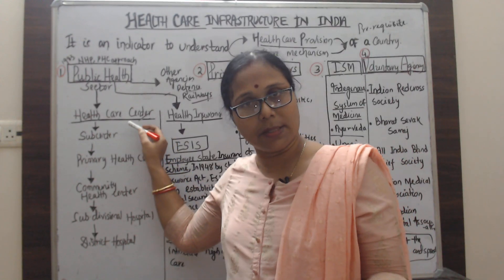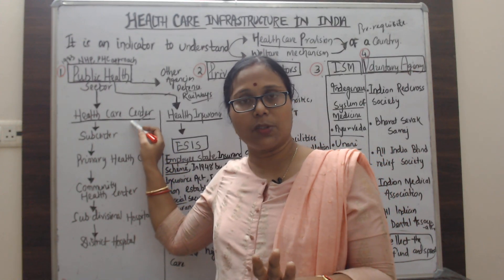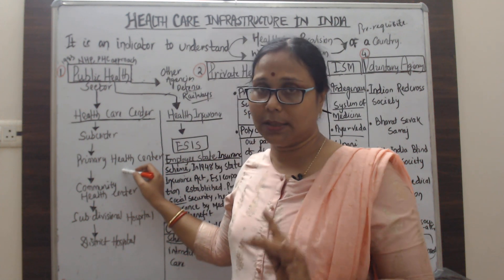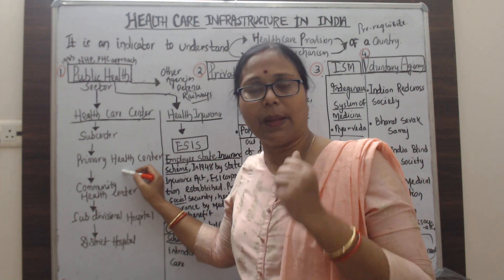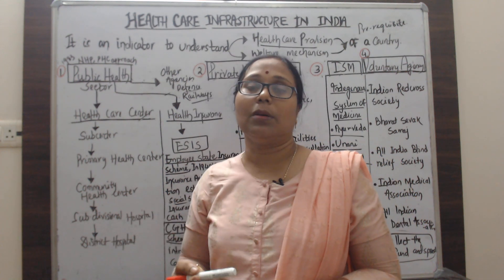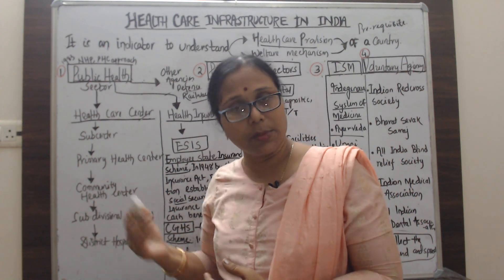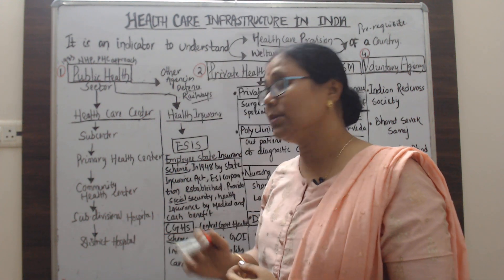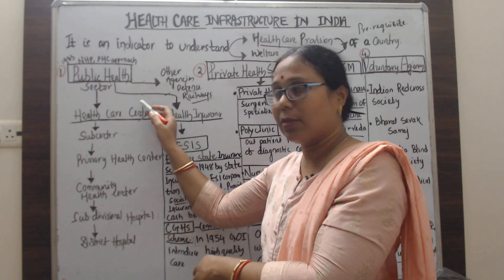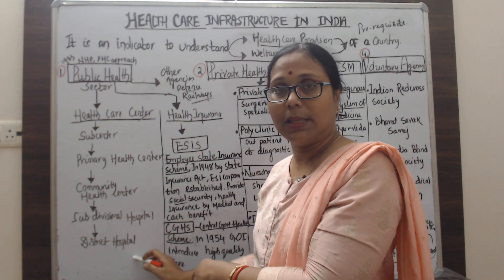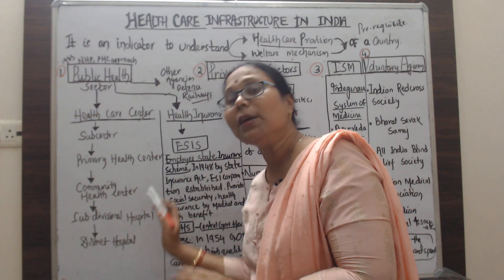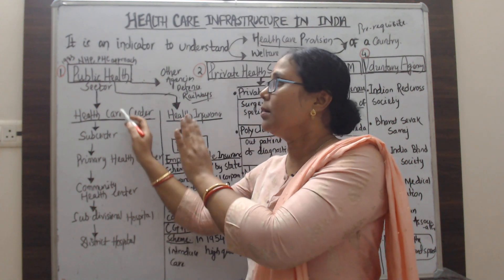In the healthcare center hierarchy: sub-centers serve a population of 5,000 in rural areas; primary health centers serve about 30,000 population; community health centers serve 80,000 to 1.2 lakh population; and sub-divisional hospitals and district hospitals are also there. Through this provision, from the grassroot rural level to the urban area, health services are provided — all coming under the public health sector.